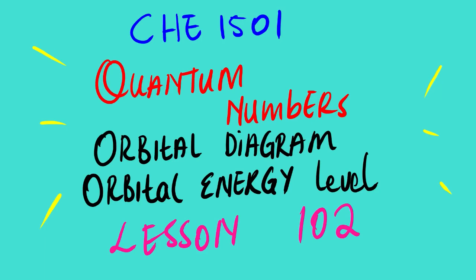Today's lesson video is based on chemistry 1501. We are going to look at quantum numbers. The subtopic is orbital diagram and orbital energy level. This is lesson 102. Let us start.